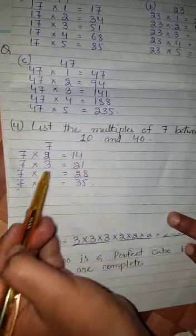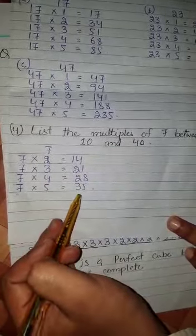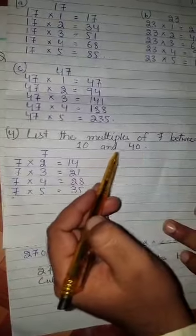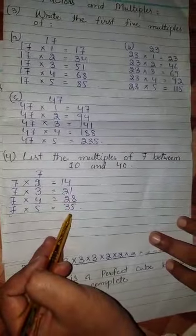I have 14 which is 7 times 2. 7 times 4 is 28, changing up to 40. 7 times 5 is 35, which is between 10 and 40. So my correct answers are 14, 21, 28, 35.